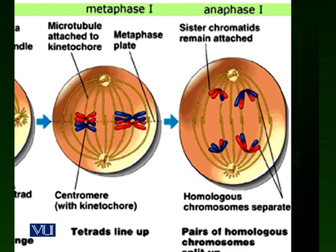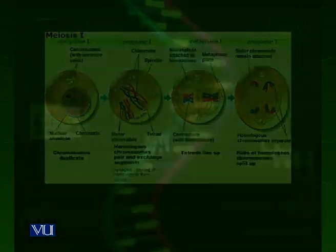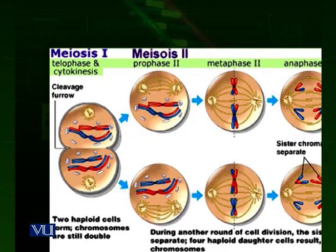When the cell just divides, meiosis II starts. As you can see in the diagram, after meiosis I, one cell is divided into two cells, each with a half set of chromosomes. In the case of human beings, for example, if there were 46 chromosomes in 23 pairs, then each daughter cell after meiosis I will now have 23 chromosomes, one from each homologue.